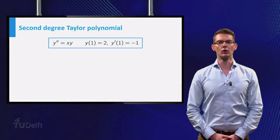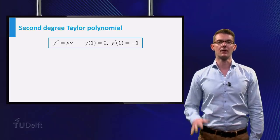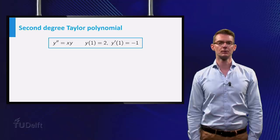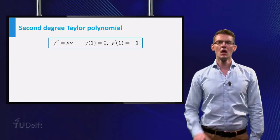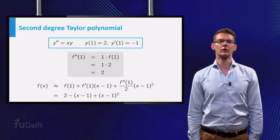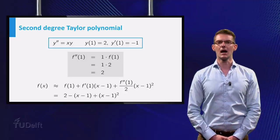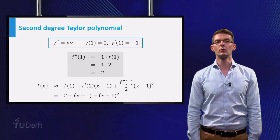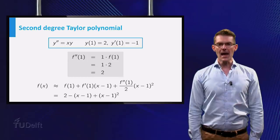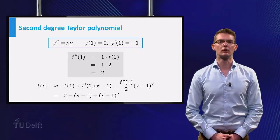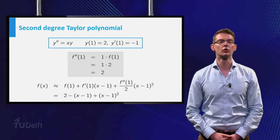A second degree Taylor polynomial may give us a better approximation. We have already established that f of 1 is 2 and f prime of 1 is minus 1. But what is the second derivative of f of x in the point x is 1? To find this value, we will need the differential equation. This equation tells us that the second derivative of f of x is equal to x times f of x. So the second derivative in x is 1 is equal to 1 times 2. If we plug all these values into the general formula for the second degree Taylor polynomial, then we get the Taylor approximation that you see at the bottom of this slide.